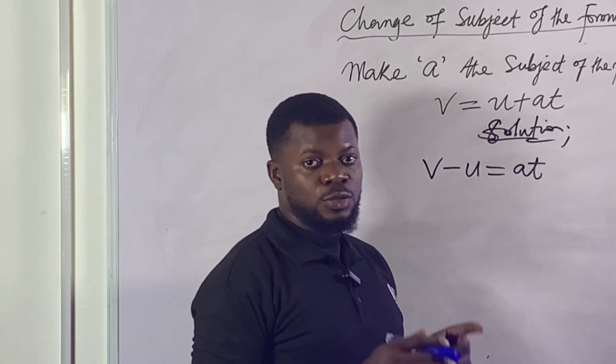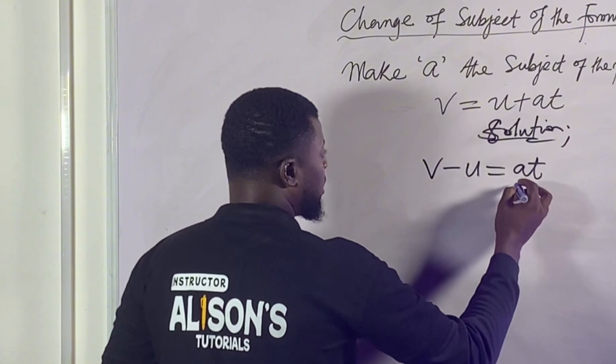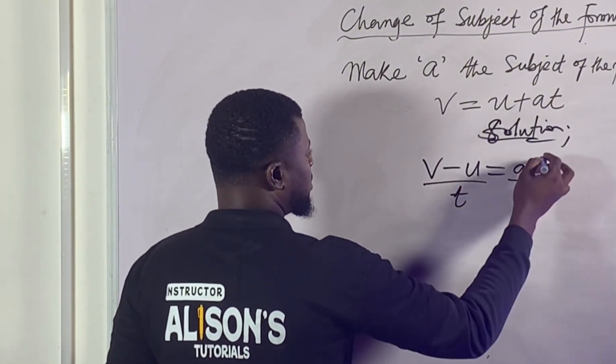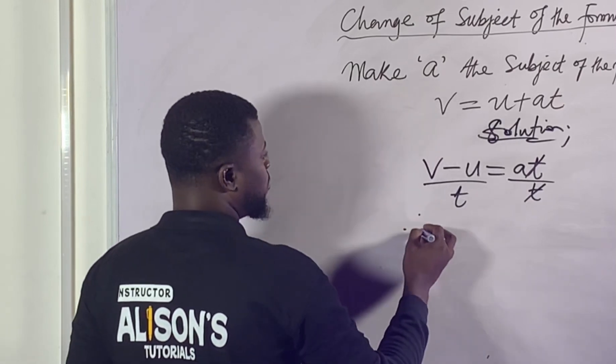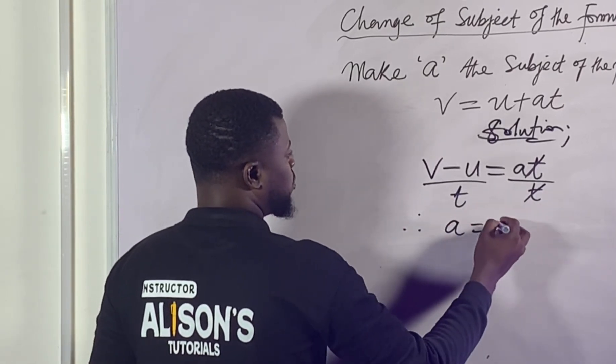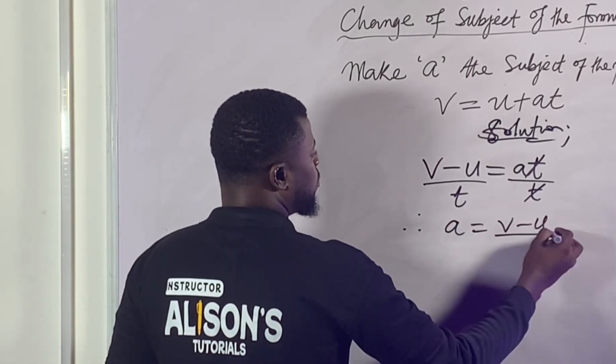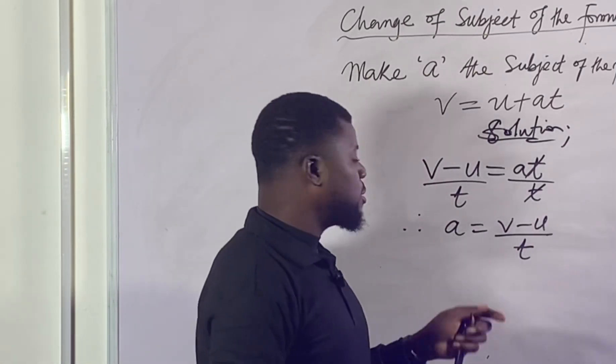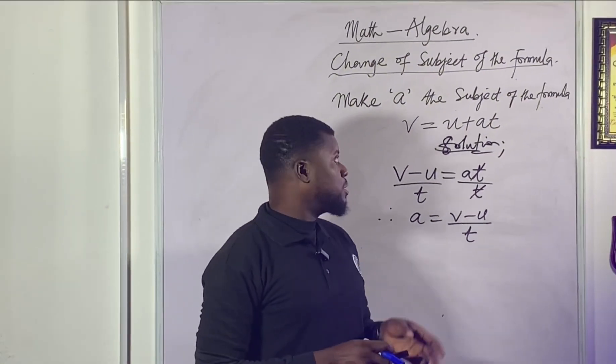And then our target is to make 'a' the subject of the formula. To achieve that, we need to divide both sides by 't'. Divide both sides by 't', and 't' cancels out with 't'. Therefore, we have 'a' equals V minus U over t. So we've successfully made 'a' the subject of the formula.